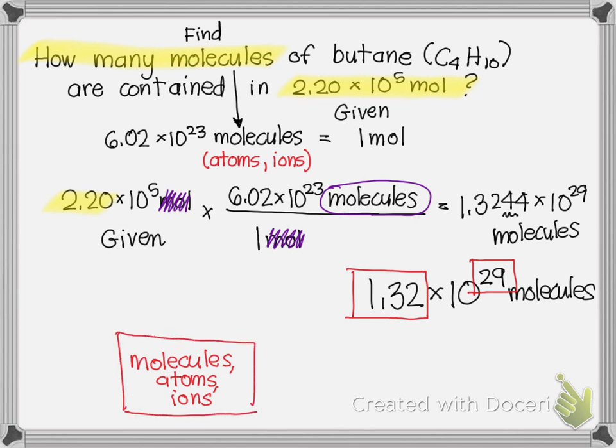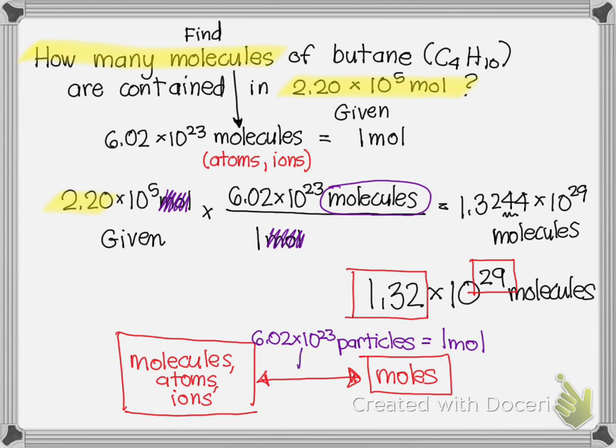and we wanted to change this into the unit moles, we use the relationship known as Avogadro's number, which is 6.02 × 10²³ particles, which can be any of the small units, equals 1 mole. And that's what we use to change between those two units.